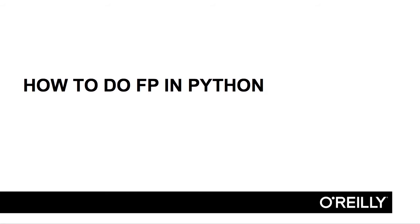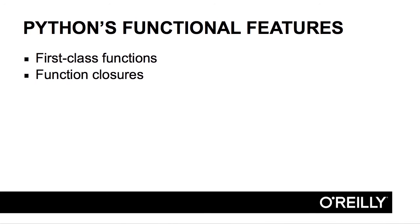This lesson is about using Python's built-in functionality to do functional programming. Python provides a couple of important features that allow us to write functional code. The first is that functions are first-class values, meaning they can be passed around like any other value and returned and so on.